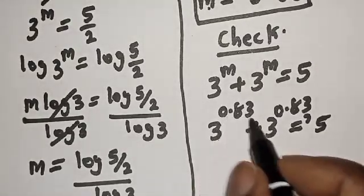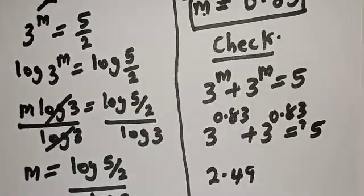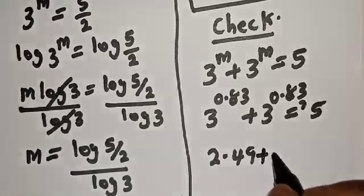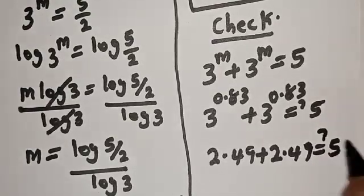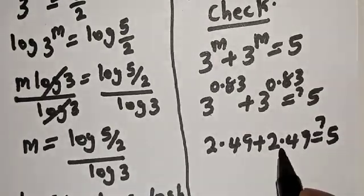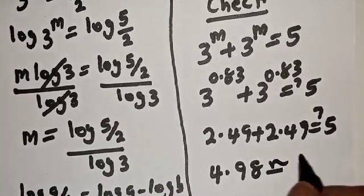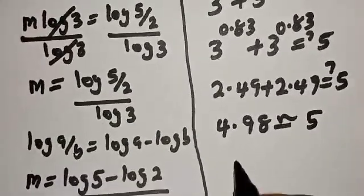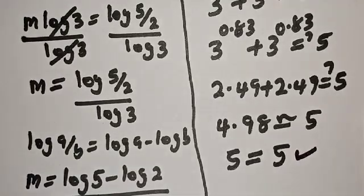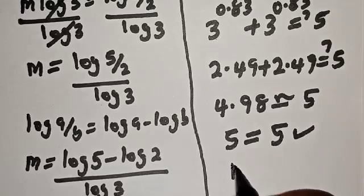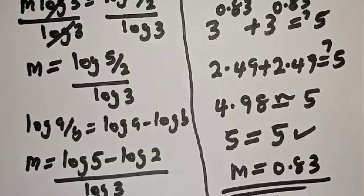Then 3^0.83 is 2.49, plus 2.49 must equal 5. Now 2.49 plus 2.49 equals 4.98, which is approximately equal to 5. Therefore the left side equals the right side, which satisfies the given equation at m equals 0.83.